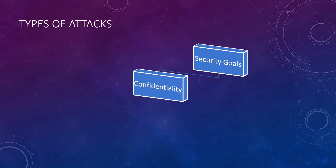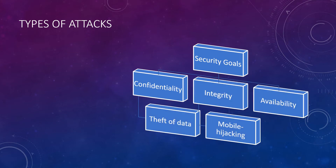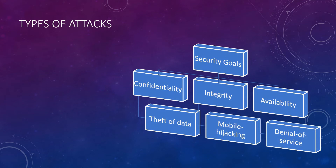When it comes to cybersecurity, there are three main goals that should be covered. These are confidentiality, integrity, and availability. We can categorize types of attacks under these security goals. Now we are going to talk about these attack types in detail.